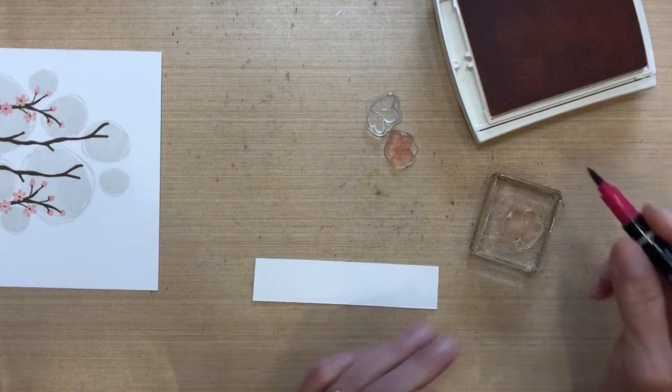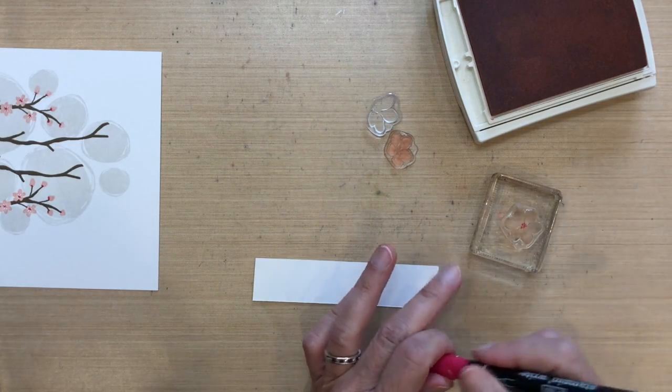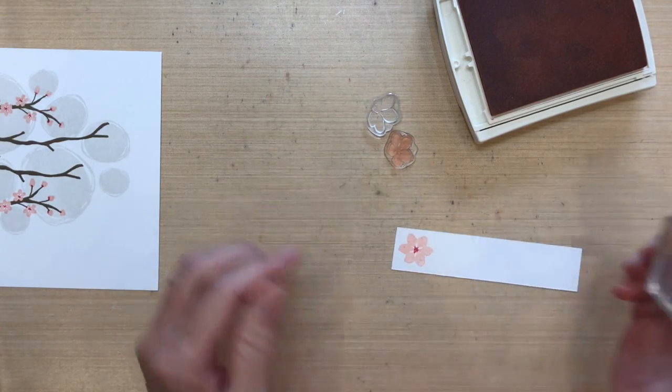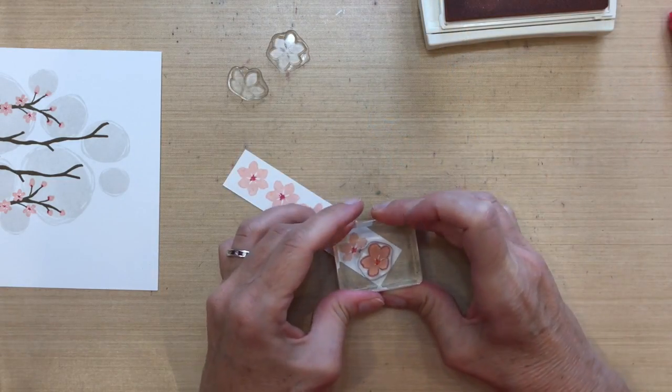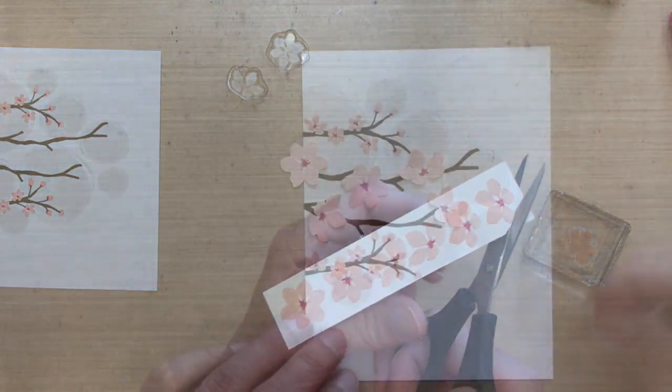There are three other flowers that come in this set. I'm going to stamp two of each of these using the same technique of covering it with the Blushing Bride and then adding some rose red marker in the center. I'll do two of each of these three different flowers just to make sure I have enough, and then I'm going to cut each one out.